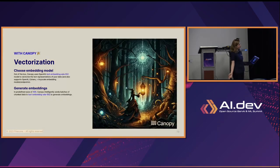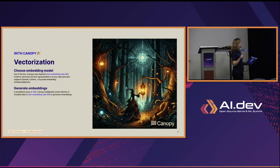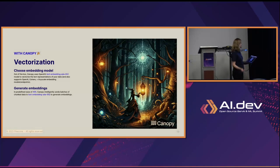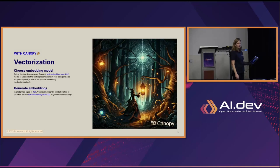Canopy does it all for you. By default we use Ada2, an OpenAI text vectorization model. But as of version 0.5.0 — released this morning — we support Cohere and AnyScale embedding models. This is especially exciting for multilingual RAG applications, since Cohere embedding models are multilingual and OpenAI's are not. We also generate embeddings in batches of 400, send them to the OpenAI API, and handle everything with generator objects, error handling, and retries.